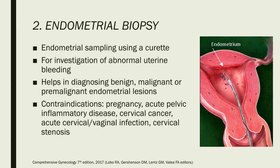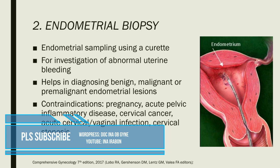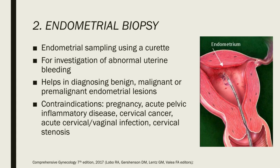The second procedure is endometrial biopsy — endometrial sampling using a curette, used for investigation of abnormal uterine bleeding. It helps diagnose benign, malignant, or premalignant endometrial lesions. Contraindications to endometrial biopsy include pregnancy, acute pelvic inflammatory disease, cervical cancer, acute cervical or vaginal infection, and cervical stenosis.